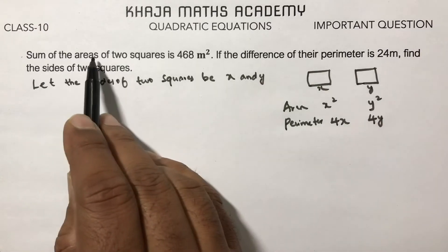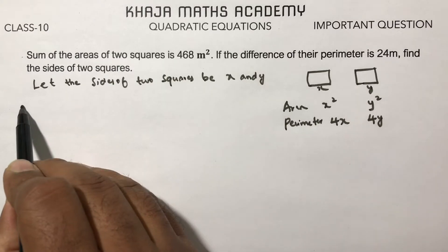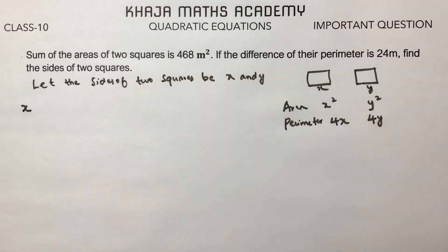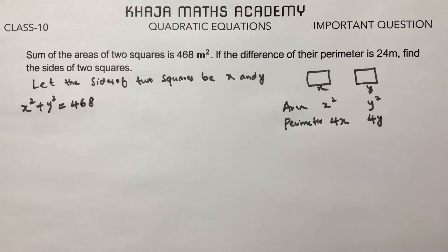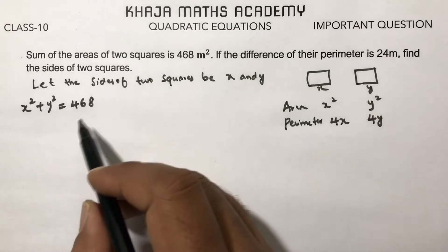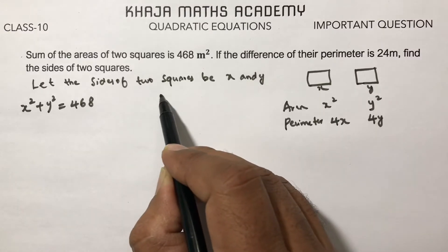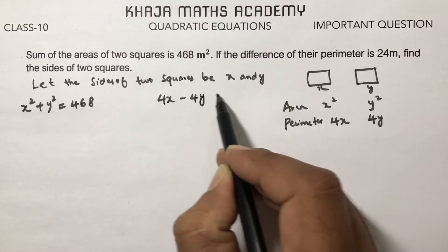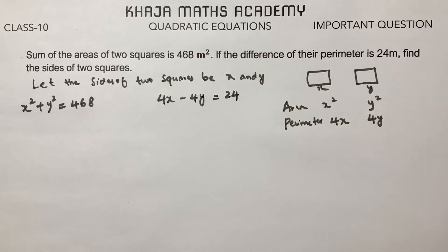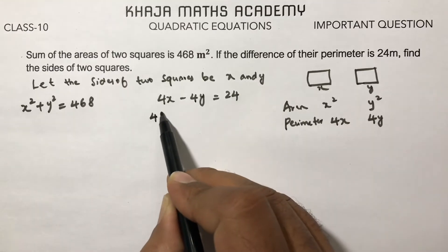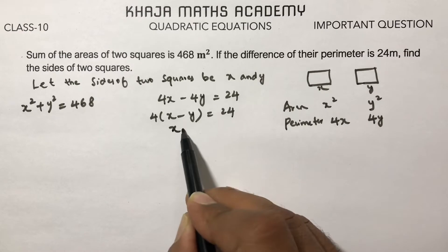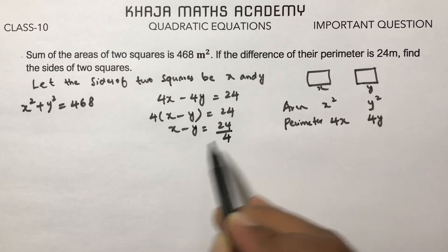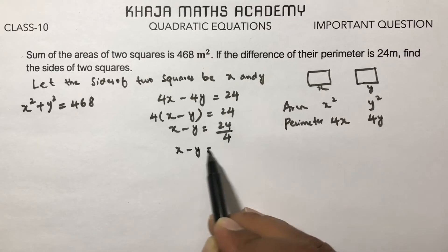They told us the sum of the areas of two squares: x² + y² = 468. The difference between their perimeters is 4x − 4y = 24. Taking 4 common, x − y = 6.